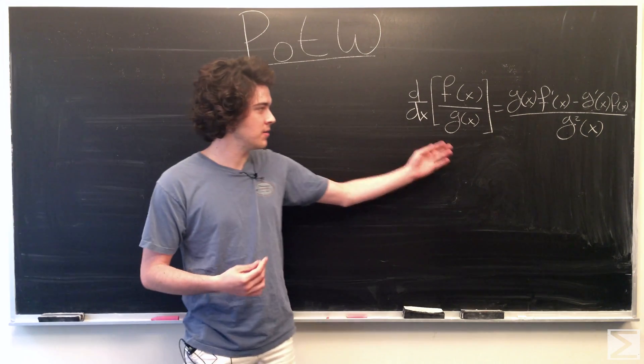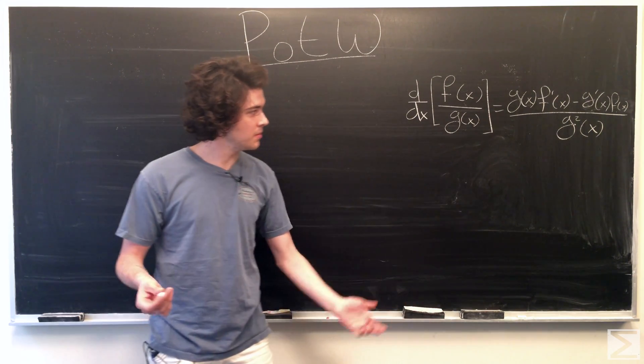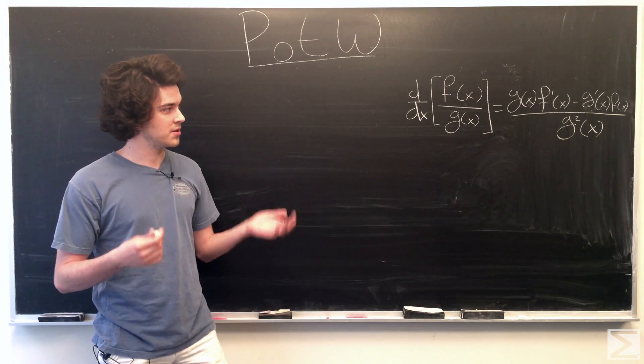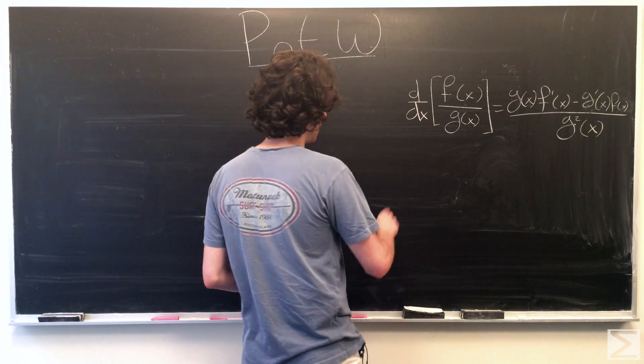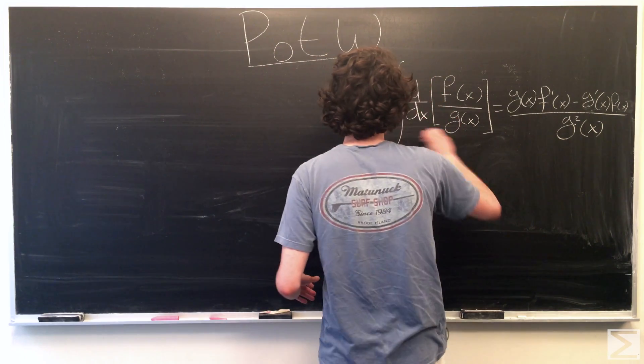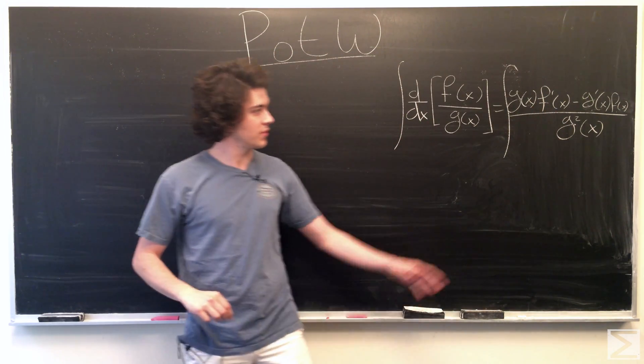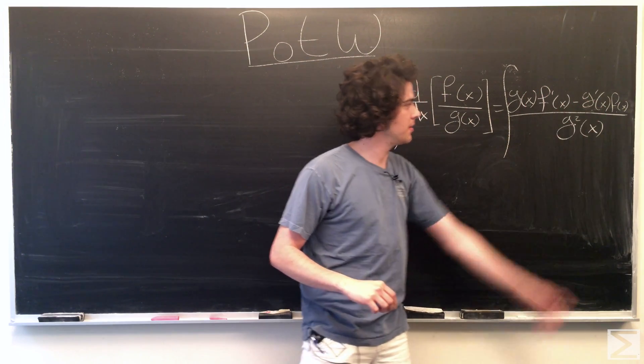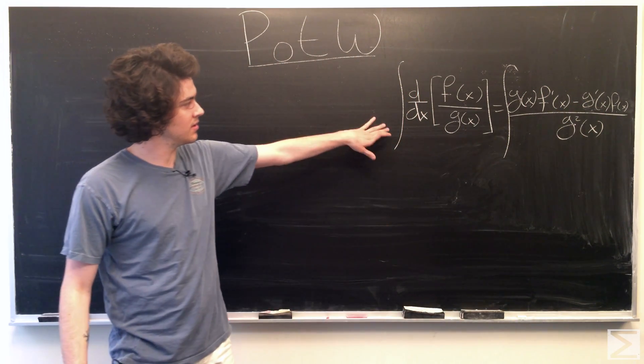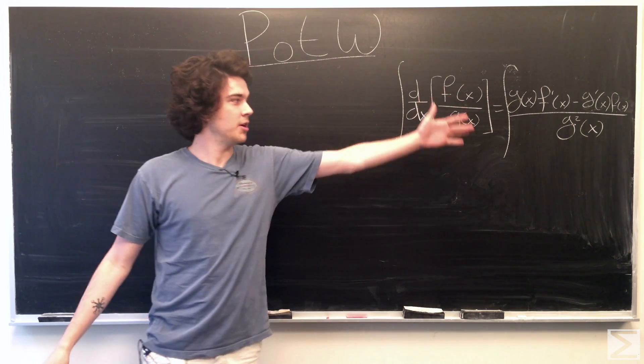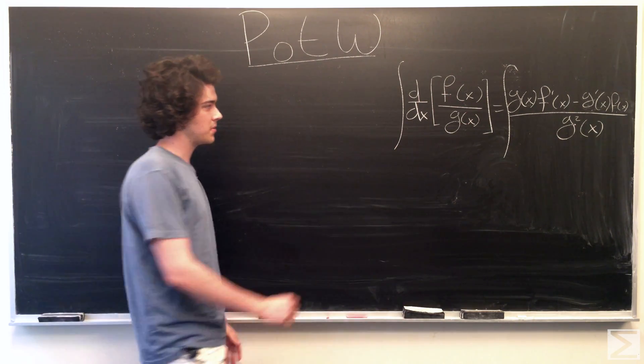We're just going to jump right into it. First thing we're going to do is integrate both sides of this equation, which we all know and love from Calculus 1. So, integrating both sides. If you notice, we can split this up into a sum of two quotients and this integral. Of course, we're integrating with respect to x, so this integral is going to wipe out the derivative.